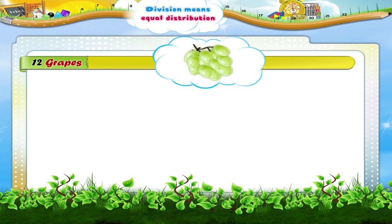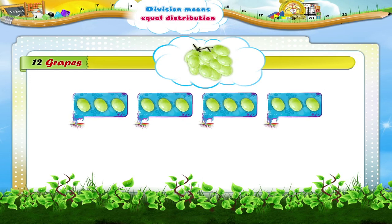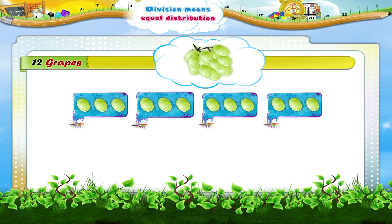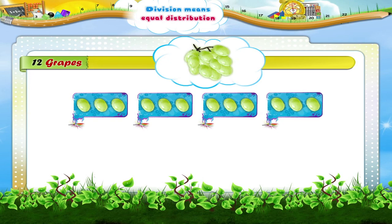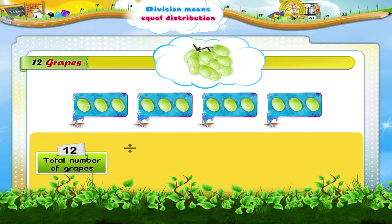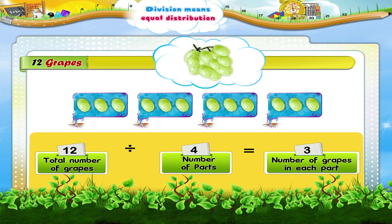Finally, here is a bunch of grapes. There are 12 grapes in this bunch. We need to divide them into 4 equal parts. How many grapes will there be in each part? When we distribute them equally into 4 parts, each part will have 3 grapes — part 1: 3 grapes, part 2: 3 grapes, part 3: 3 grapes, part 4: 3 grapes. So, the total number of grapes divided by the number of parts equals the number of grapes in each part. 12 divided by 4 equals 3.